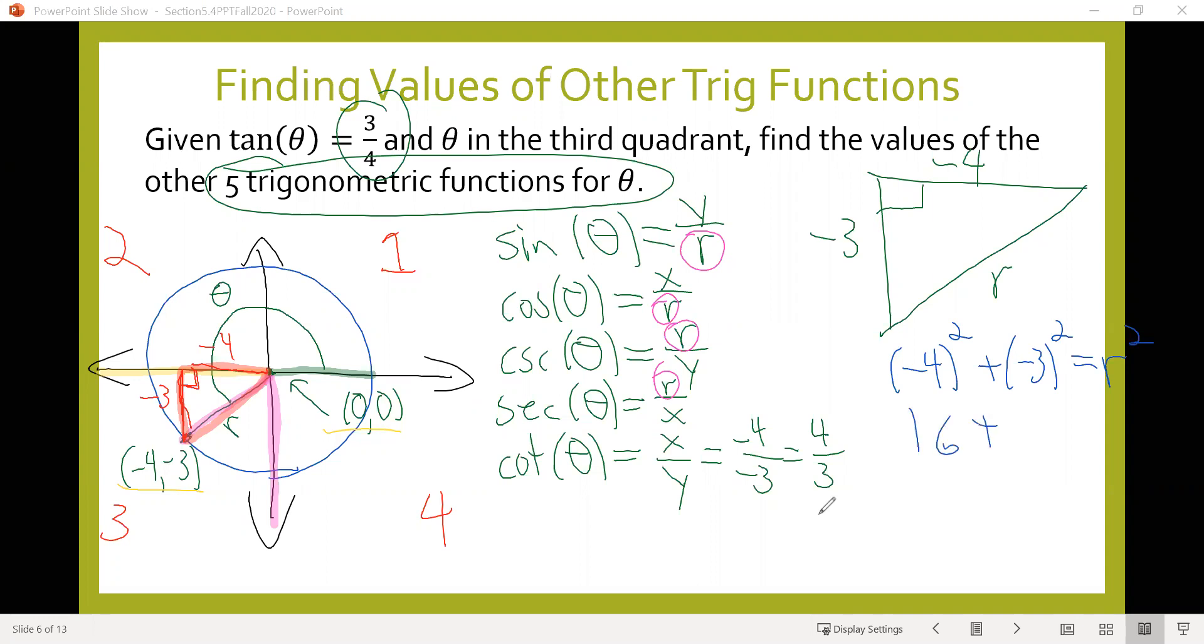We have 16 plus 9, which are both positive since negative four squared is 16 and negative three squared is 9. This equals 25, which equals r squared. Taking the square root gives us r equals plus or minus 5, but the radius is always positive, so r equals 5. Now we can fill in all the other values.